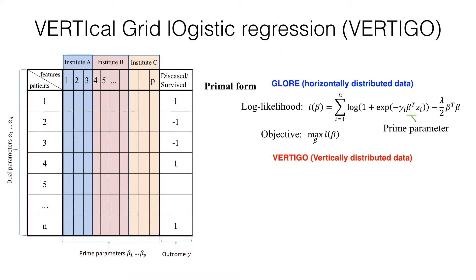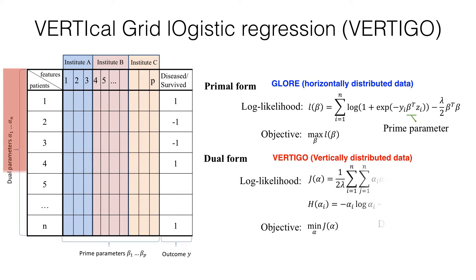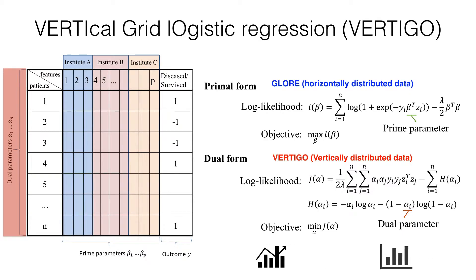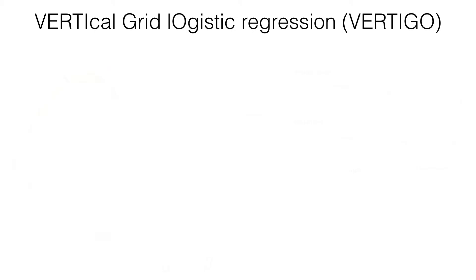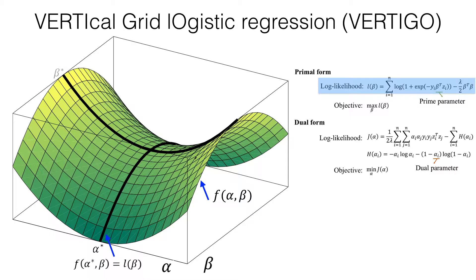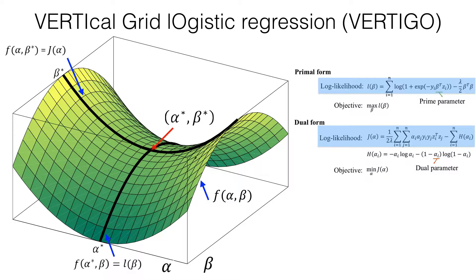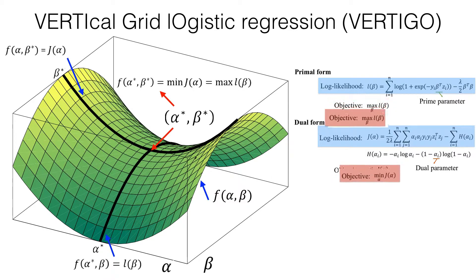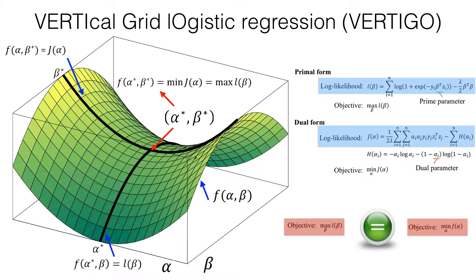Luckily, we can find a dual form of the optimization problem for logistic regression, in which we can decompose the model update into the summation of site-wise local statistics. Here we will show you the big picture of dual optimization. Suppose we have a function f of alpha and beta. Given alpha star, we can find that f of alpha star and beta is equal to the likelihood function l of beta in the primal form. Then, given beta star, we can find f of alpha star is equal to the likelihood function j of alpha in the dual form. More importantly, there is a point alpha star and beta star where f of alpha star and beta star is equal to the minimum of j of alpha and the maximum of l of beta. Therefore, the maximization of the dual form j of alpha is equivalent to the minimization of the primal form l of beta.